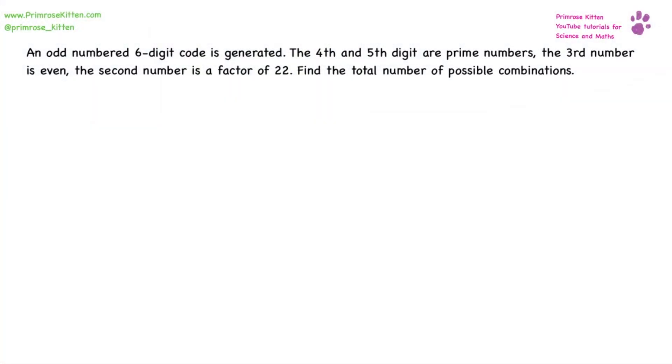An odd numbered six digit code is generated. The fourth and fifth digit are prime numbers. The third number is even. The second number is a factor of 22. Find the total possible number of combinations. So we're going to be logical with this.